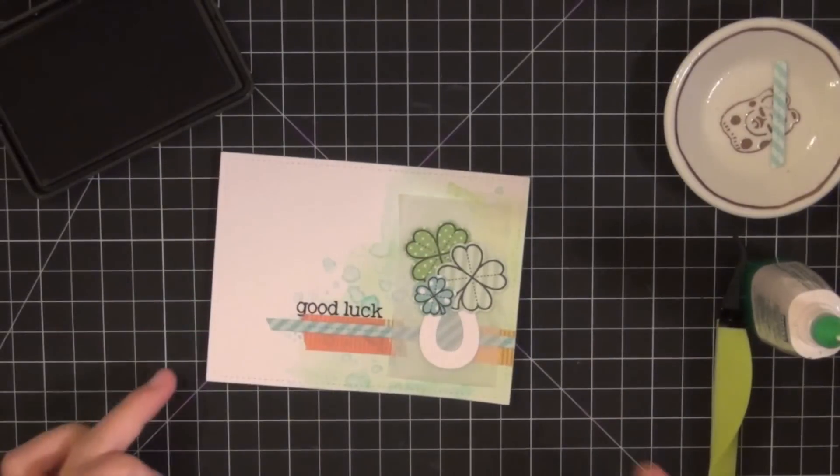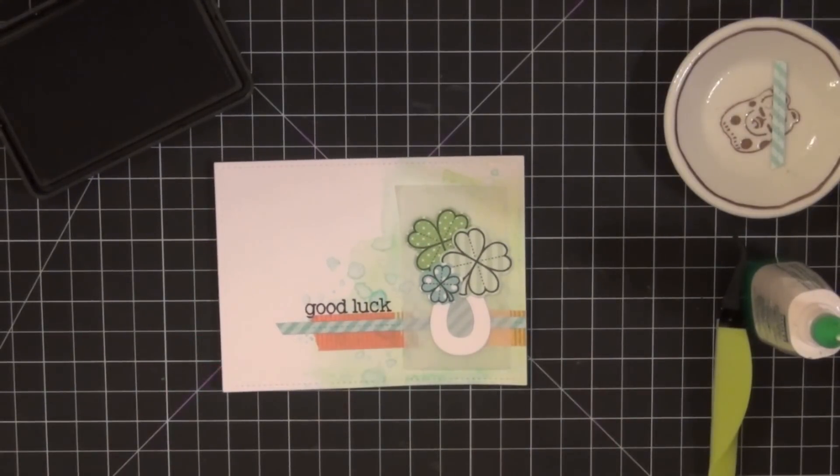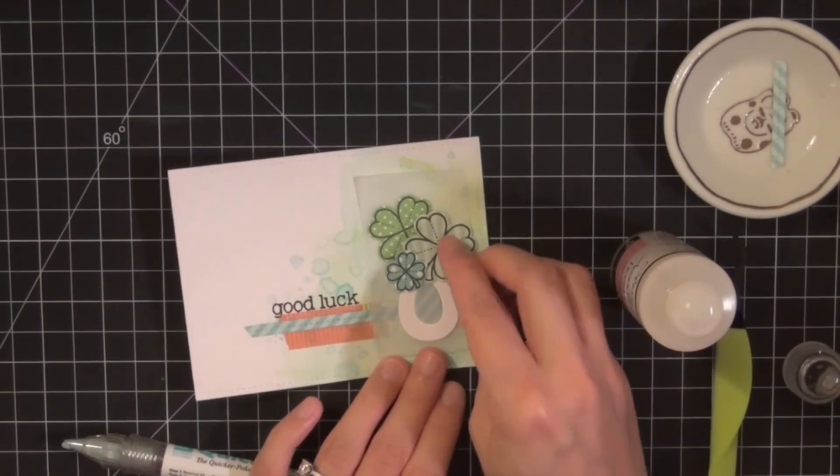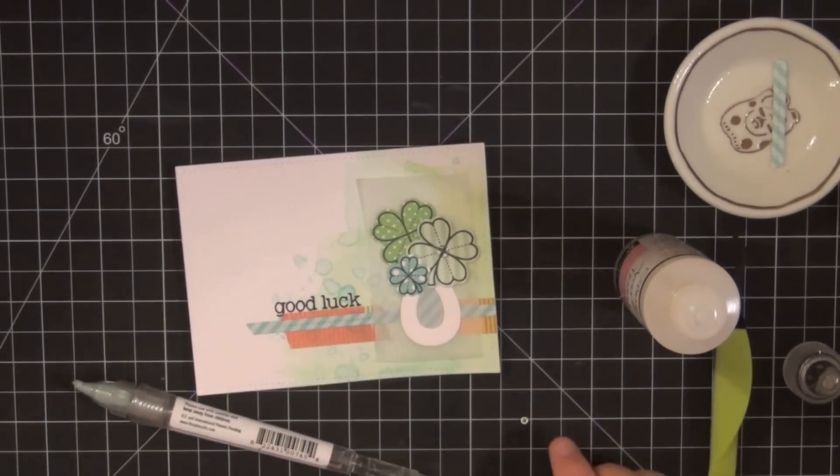So now that all of the main elements are done, I'm going to go ahead and stamp my good luck sentiment using some of the new Lawn Fawn black licorice ink. It's a really nice crisp ink. I really, really like it.